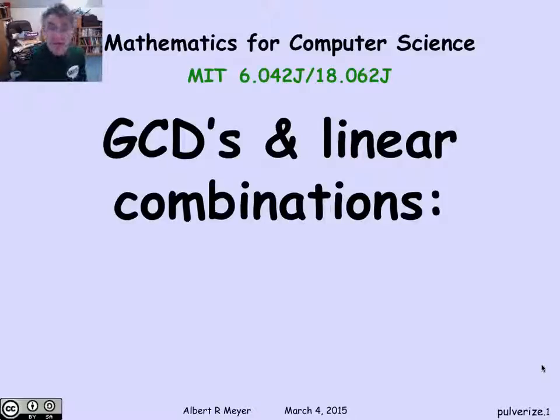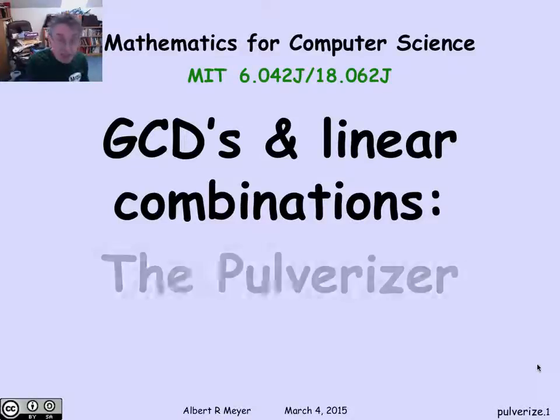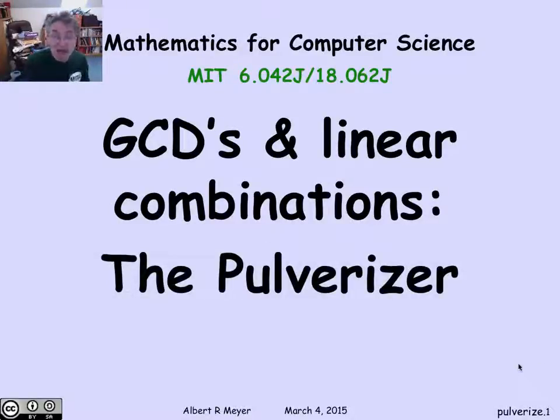Let's continue our examination of GCDs and linear combinations and the Euclidean algorithm by examining what's often called the extended Euclidean algorithm. It's a good name for it. Its ancient name, dating back to ancient India, is the pulverizer.